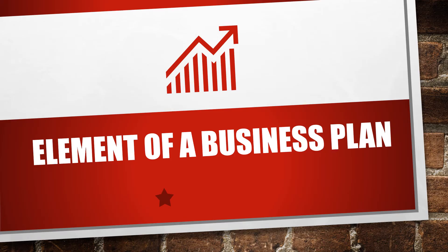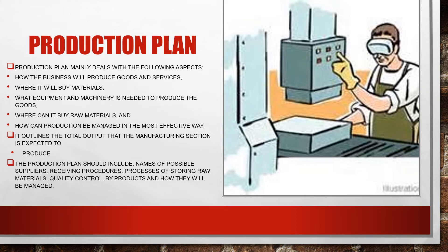Production plan: a production plan mainly deals with how the business will produce goods and services, where it will buy materials, what equipment and machinery is needed, where it can buy raw materials, and how production can be managed in the most effective way. It outlines the total output the manufacturing section is expected to produce. It should include names of possible suppliers, receiving procedures, processes for storing raw materials, and quality controls.